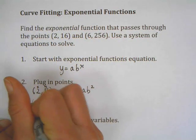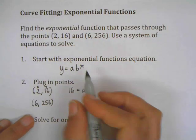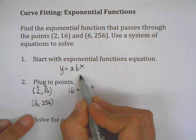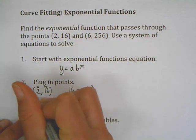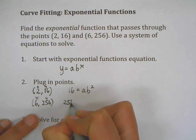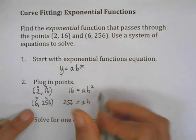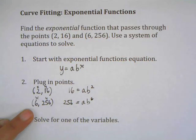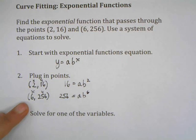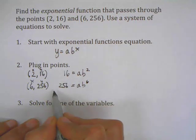For my other point, I have (6, 256), so once again I'm using my basic formula for the exponential function. I'm going to substitute in my values, so I have 256 equals ab^6. Now I have a system of equations.